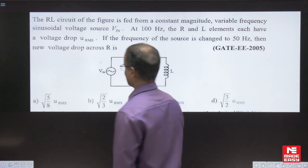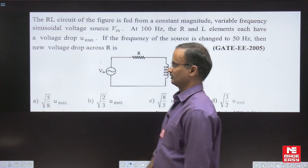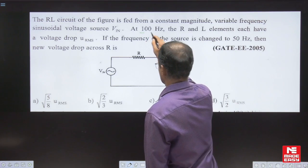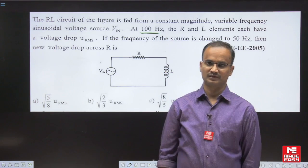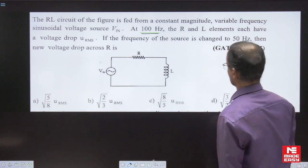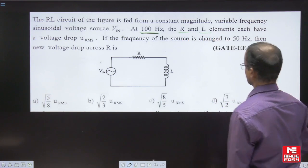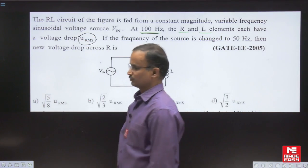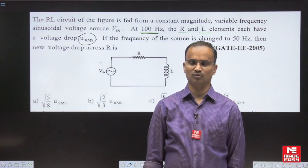In this example, the given network is an RL series circuit. Initially, the operating frequency is 100 Hz. At that instant, the voltage across the resistance and voltage across the inductor both have the same voltage drop — they are exactly equal.